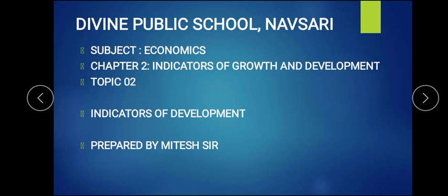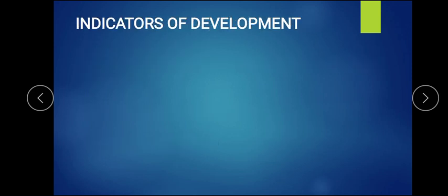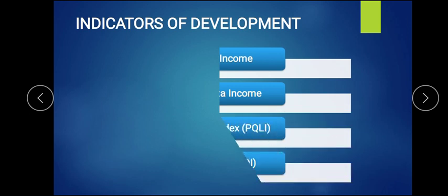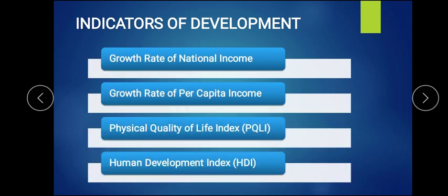There are four types of indicators. First is growth rate of national income. Second is growth rate of per capita income. Third is Physical Quality of Life Index, that is PQLI. And lastly, Human Development Index. These are the four types of indicators for economic development.